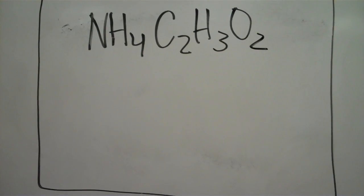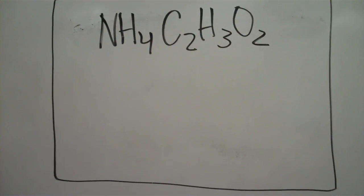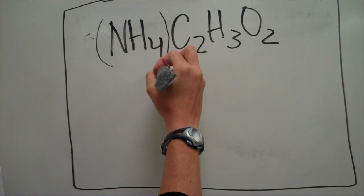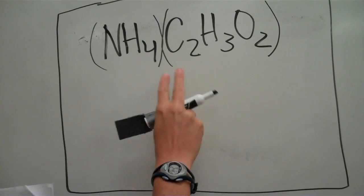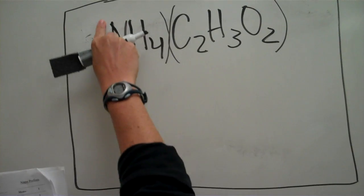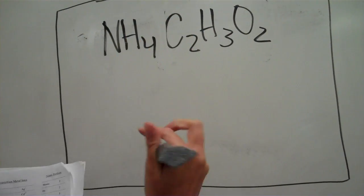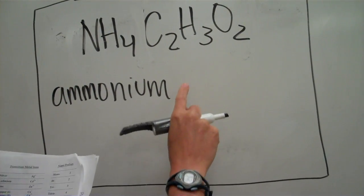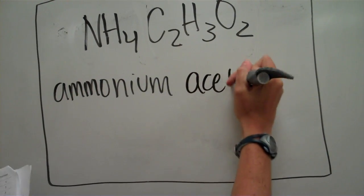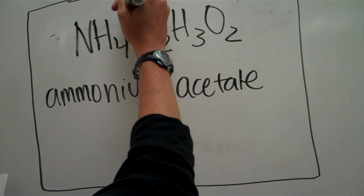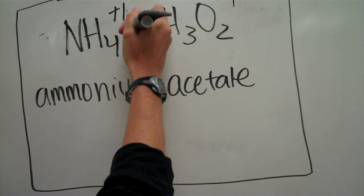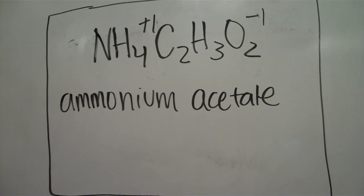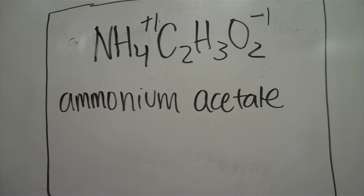The formula is NH₄C₂H₃O₂. You might look at that and have no idea what it is. When you see something like that, you start grouping things. You can see that this is one polyatomic and that is another. NH₄ is the first one on the list — that's ammonium. Then C₂H₃O₂ is right below it — that's acetate. Ammonium is plus one, acetate is minus one, so no subscripts are needed — it's just ammonium acetate. The faster you recognize the polyatomics, the better off you'll be.